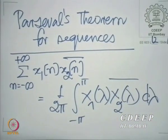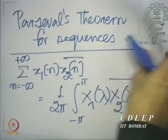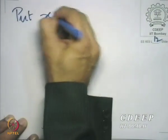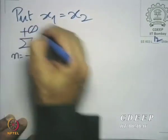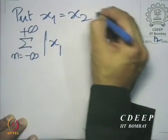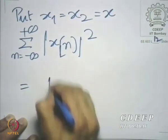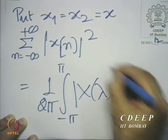There is one specific consequence of this dot product, which we shall see in a minute. That consequence follows if you take x1 equal to x2. We get: summation over n from minus to plus infinity of mod x[n] squared equals 1 over 2pi times the integral from minus pi to pi of mod X(lambda) squared d lambda.